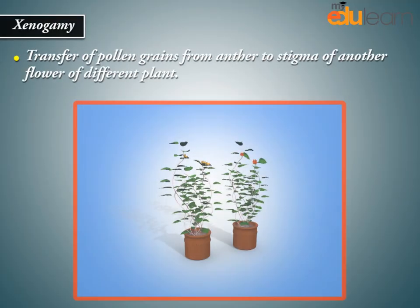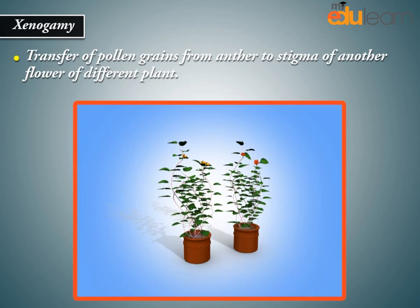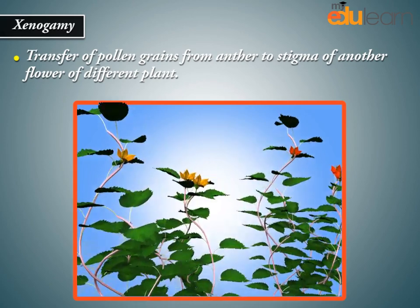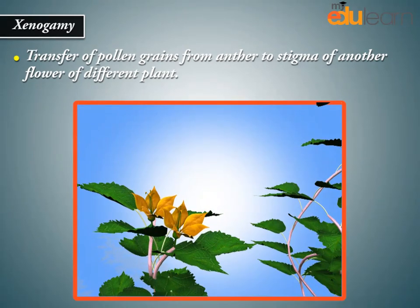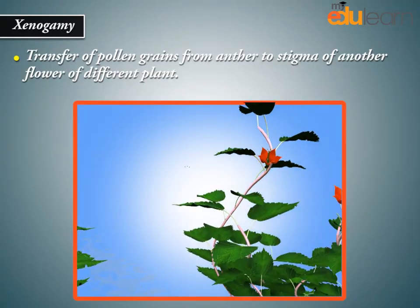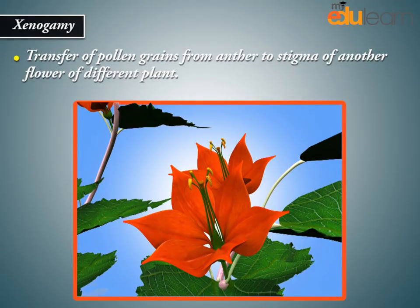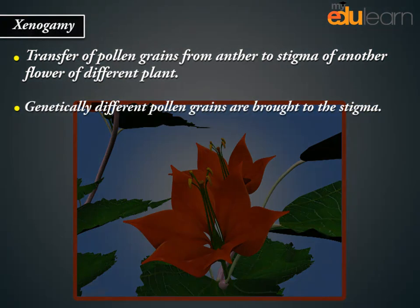Xenogamy is the transfer of pollen grains from anther to stigma of another flower of a different plant. Genetically different pollen grains are brought to the stigma.